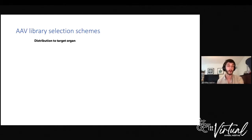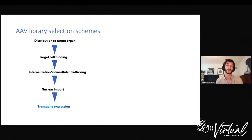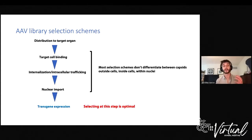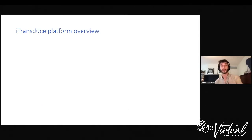AAV transduction is a multi-step process. First, you have to get to the right organ, then the right cell, get inside that cell, reach the nucleus, finish uncoating, and drive transgene expression. The traditional library approach doesn't necessarily differentiate between all of these steps — between variants that are in the nucleus, in the cell, or sometimes even on the cell. So we sought to select for variants at this last step: at the level of transgene expression. That's where we came up with our platform, iTransjuice.